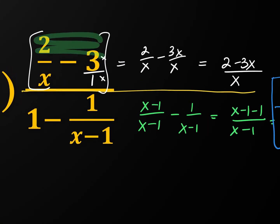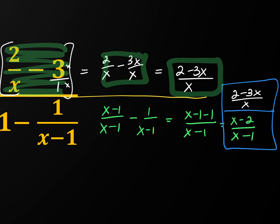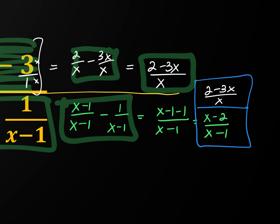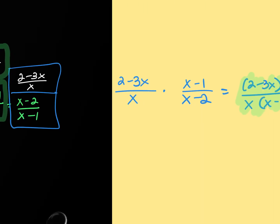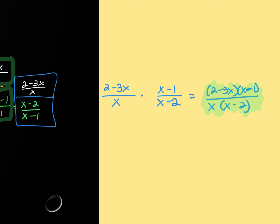Recap of method one: in the numerator I had 2/x minus 3, giving (2-3x)/x. In the denominator, change 1 to (x-1)/(x-1), subtract 1/(x-1), combine to get (x-2)/(x-1). Then keep-change-flip: top stays (2-3x)/x, division becomes multiplication, flip the bottom. Nothing canceled this time so the answer is (2-3x)(x-1) over x(x-2). You don't have to distribute it out.